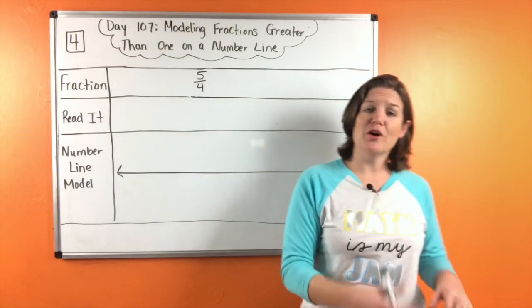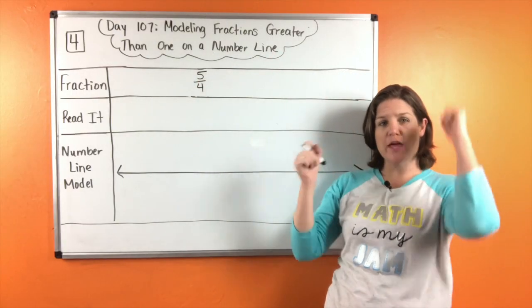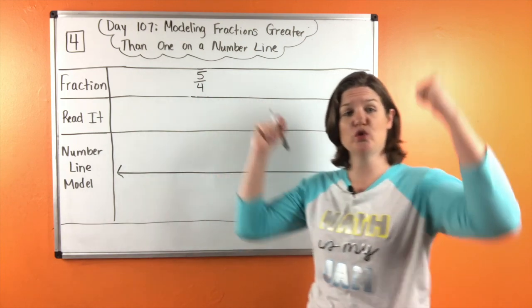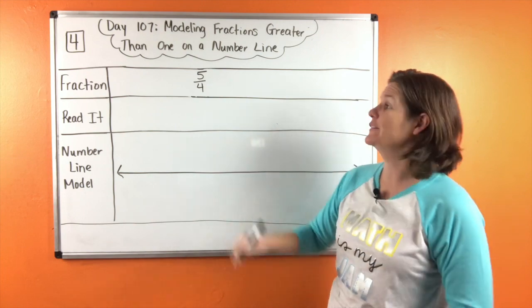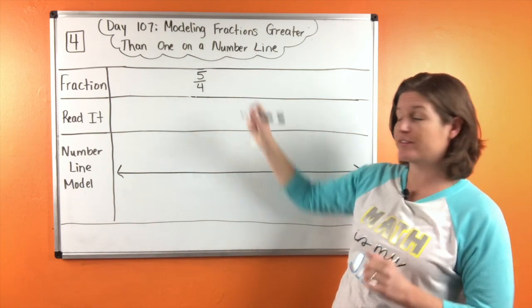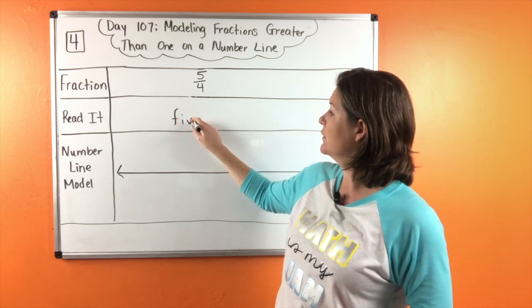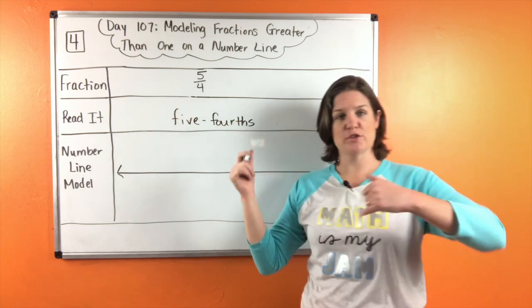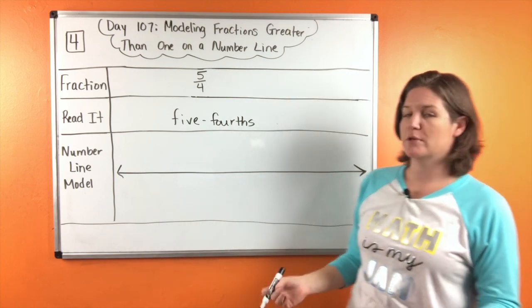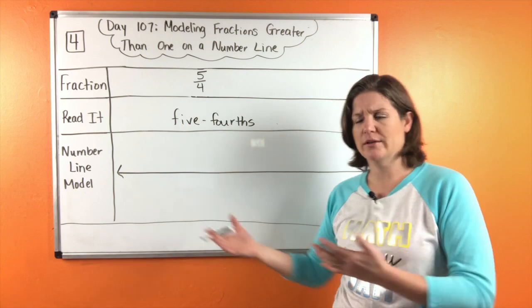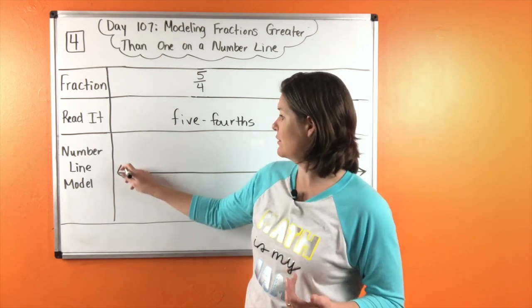Number four, we have our fraction greater than one. And we know that because the numerator is greater than the denominator. We would read it as five fourths. Check your spelling five fourths. So check your spelling there and then join me at your number line model. So when we're going to plot a point, we need to start with what? Zero.